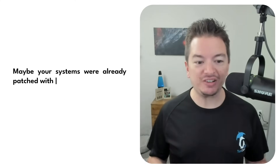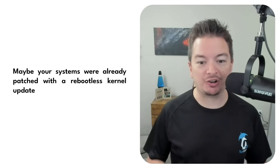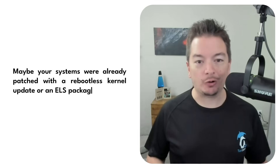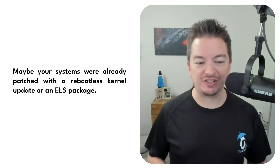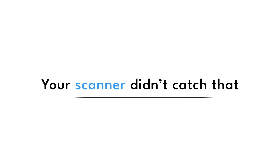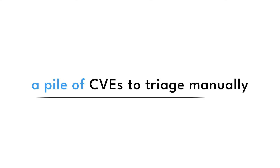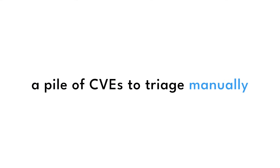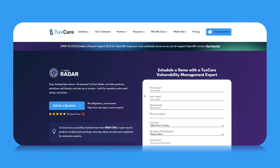If you've used traditional scanners, you've probably run into false positives. Maybe your systems were already patched with a reboot-less kernel update or an ELS package, but your scanner didn't catch that, and now you've got a pile of CVEs to triage manually. Anybody say Google Spreadsheets?